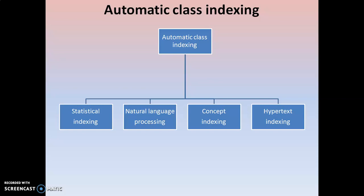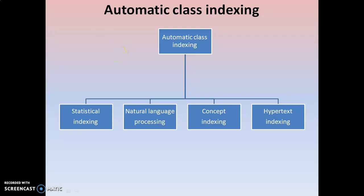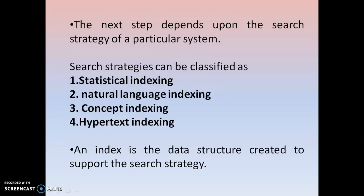First of all, we will look at statistical indexing. Automatic class indexing, as shown in this diagram — here also I have listed the types of automatic class indexing. Now we are going to discuss statistical indexing.